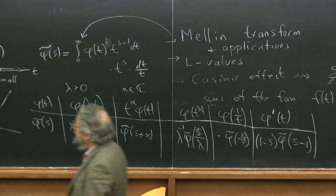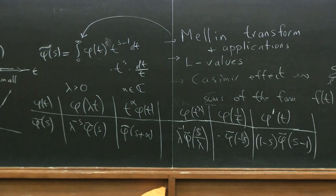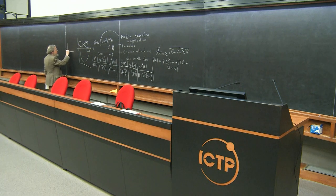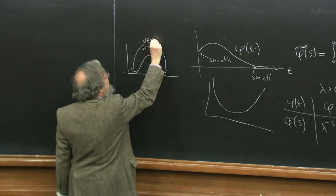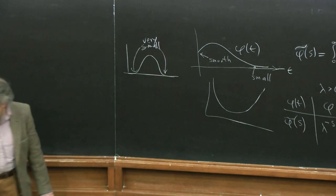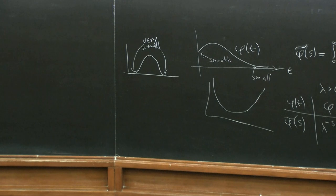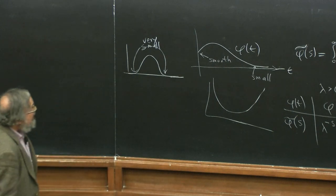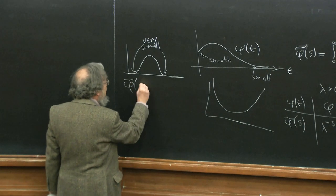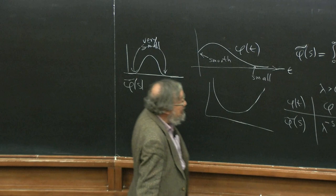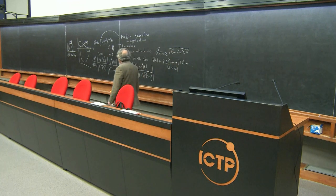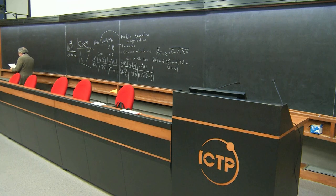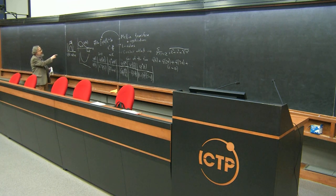So first, a couple of trivial properties just so one gets used to the Mellin transform. If I have φ(t) with Mellin transform φ̃(s), and I rescale in the t-axis by considering φ(λt) where λ is a positive number, then trivially one gets φ̃(s) times λ^(−s). All of the properties I'm going to write down will also be true in the more general class where the integral definition doesn't converge — these transformation rules will still hold.